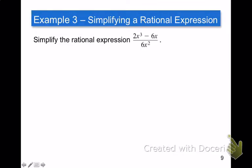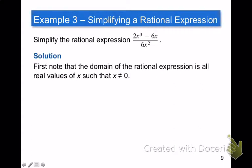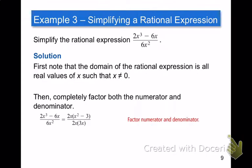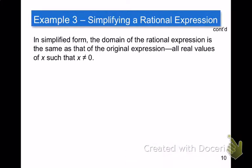As long as you know that x cannot equal 0, that's really important. Note that the domain means x cannot equal 0. You should always do that for these rational expressions. Make sure that the denominator is never 0. Factor out the 2x, and you can factor out 2x downstairs, which makes that 1 over 3x, x squared minus 3 over 3x. In the simplified form, the domain of that rational expression is the same as the original. So all real values of x such that x cannot equal 0, at the end, when you simplify, that is also true.